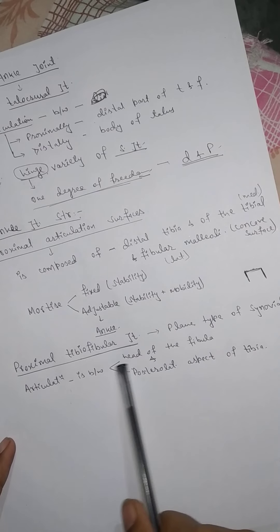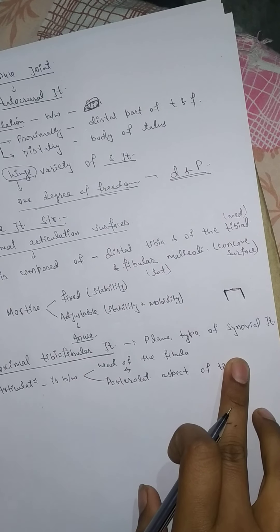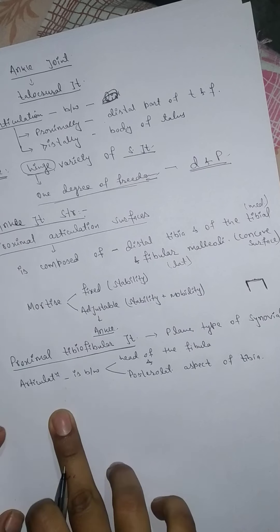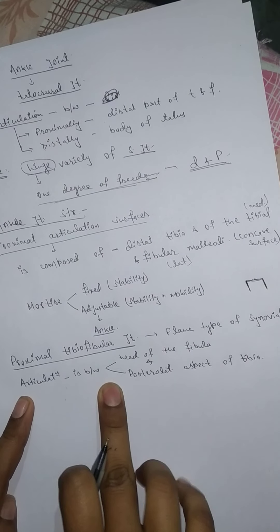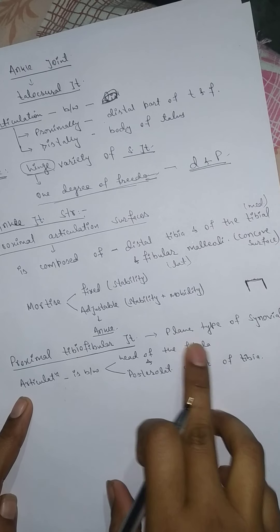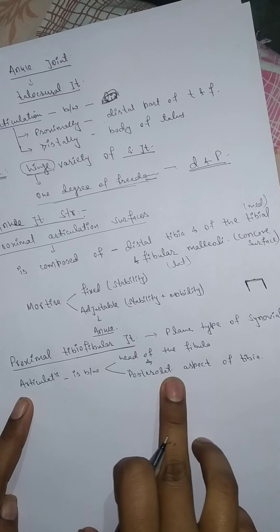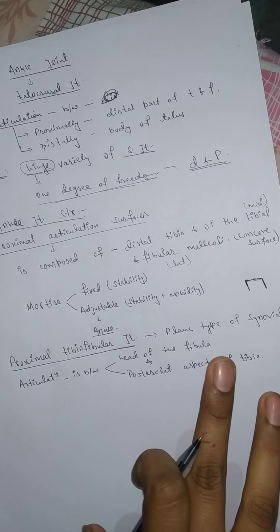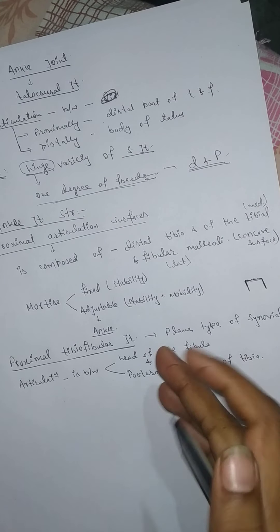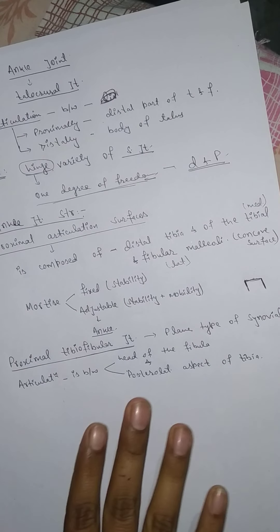The proximal tibiofibular joint is a plain type of synovial joint. The articulation is between the head of the fibula and the posterior lateral aspect of the tibia. These two facets are fairly flat and can vary in configuration between individuals.